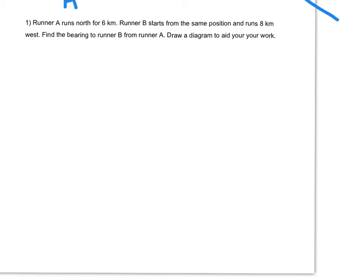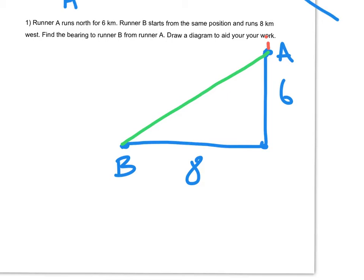Runner A runs north for 6 km. Runner B starts from the same position and runs 8 km west. So we'll say runner A is here, goes north for 6 km and stops up here. Now runner B starts from the same position and runs 8 km west. It's asking you, find the bearing to runner B from runner A. So runner B finishes here. From runner A means we're starting at runner A, who ended up up here, by the way. Ignore what I just put in. So if you wanted to go from A to B, you would have to travel along that line there, that green line.